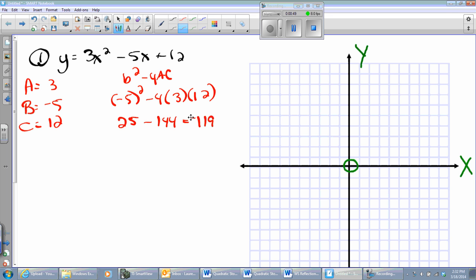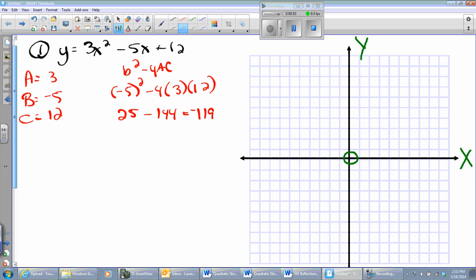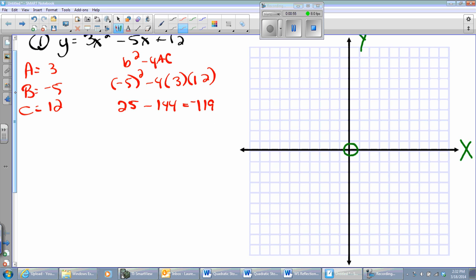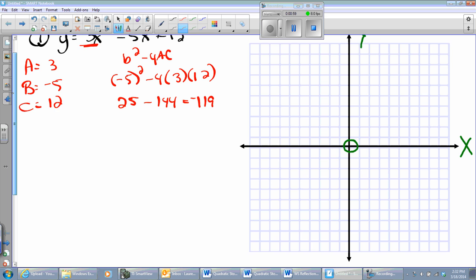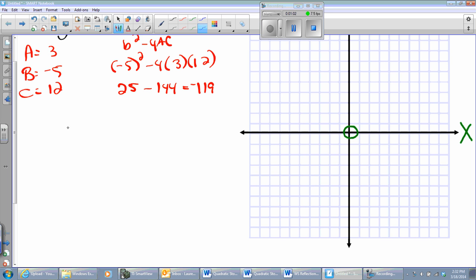It would be foolish now to go and find the zeros. There are no zeros. The vertex is going to be above the x-axis, and it's going to open upward. How do I know? a is positive. So now I'm going to find my vertex. I'm going to use x equals the negative of b over 2a. So I'm going to take the negative of b, which is 5, and 2a is going to be 6. So my vertex is at 5/6.